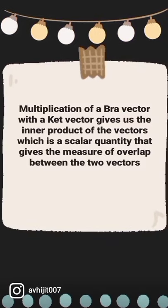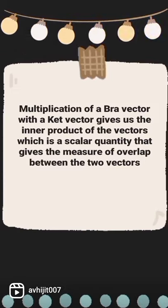Multiplication of a Bra vector with a ket vector gives us the inner product of the vectors, which is a scalar quantity that gives the measure of overlap between the two vectors.